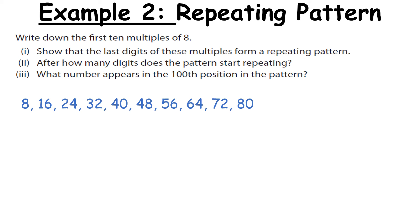It then says show that the last digits of these multiples form a repeating pattern. So here's what it looks like if I just look at the last digit. Eight, six, four, two, zero. Eight, six, four, two, zero. Okay after how many digits does the pattern start repeating? So here's our first five digits. So it repeats every five.